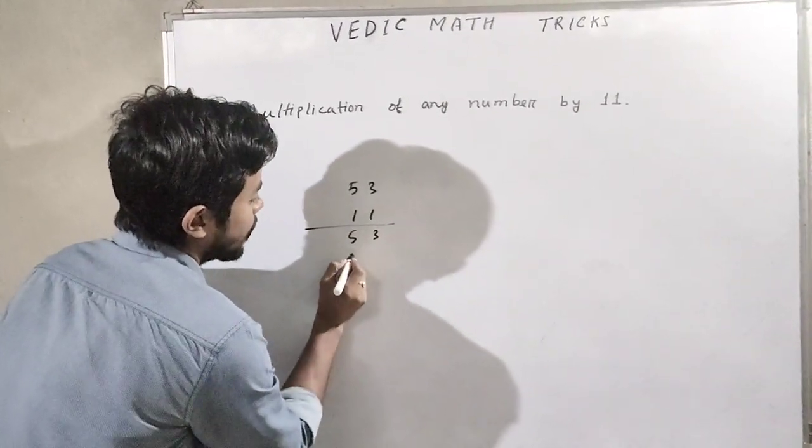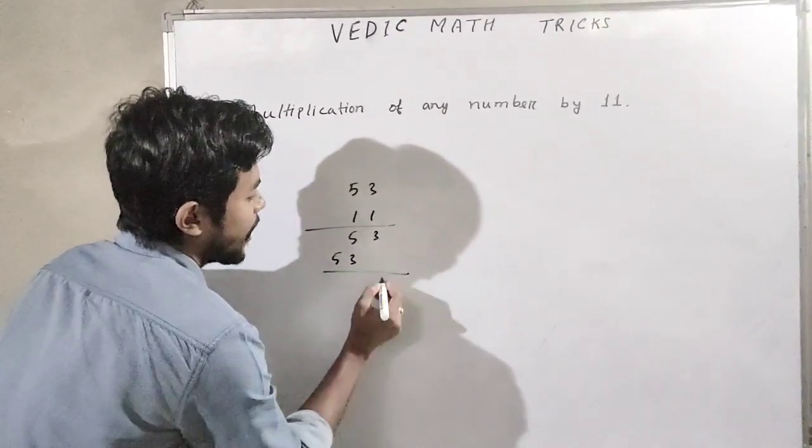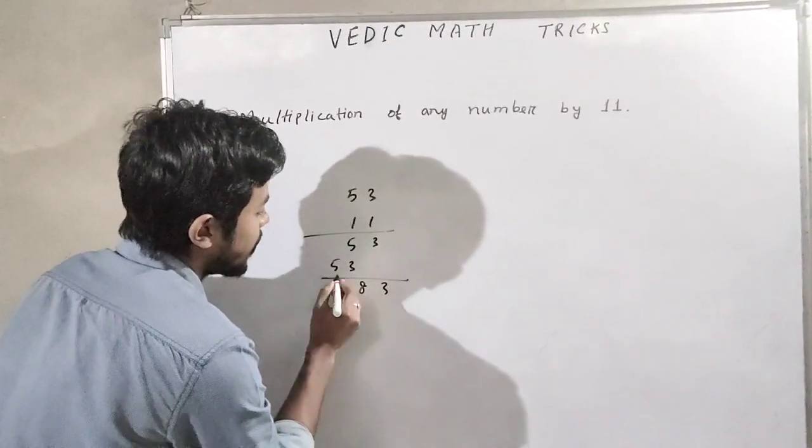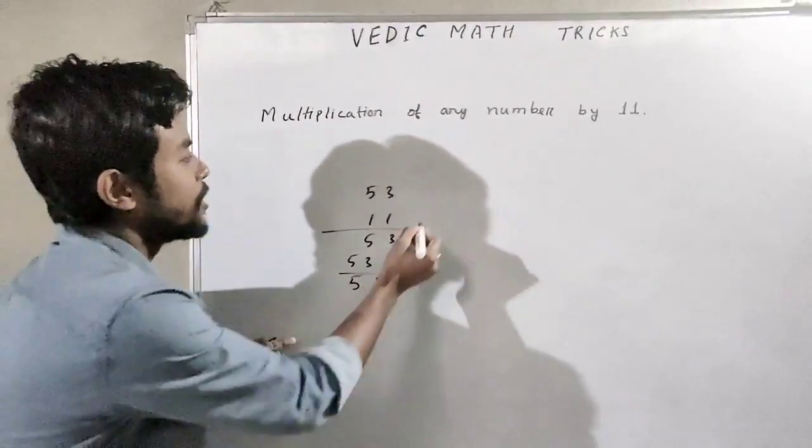What we are doing in the traditional process? 3 times 1 is 3, 3 times 1 is 3, then 5 times 1 is 5. Then add 3, 5 plus 3 is 8, then 5. This is the traditional process.